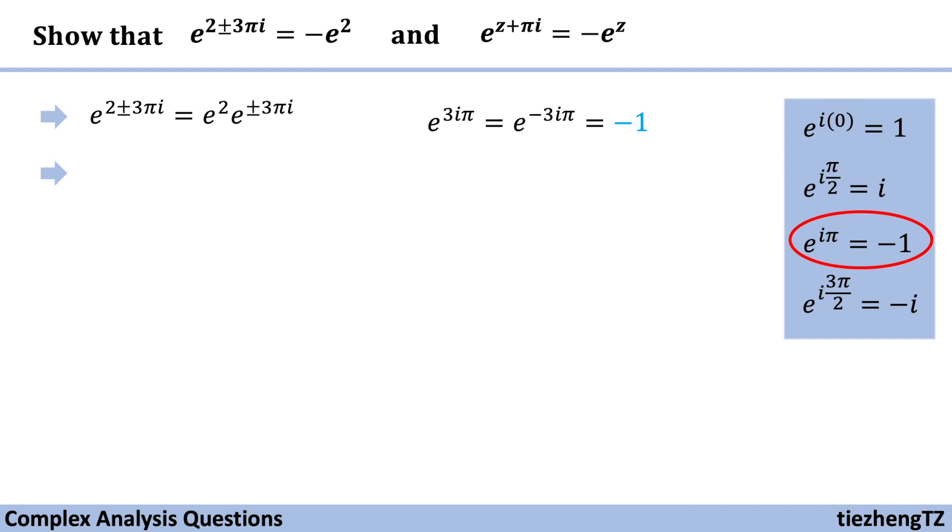We just need to substitute. Therefore, the equation becomes e square times minus 1. So it becomes minus e square.